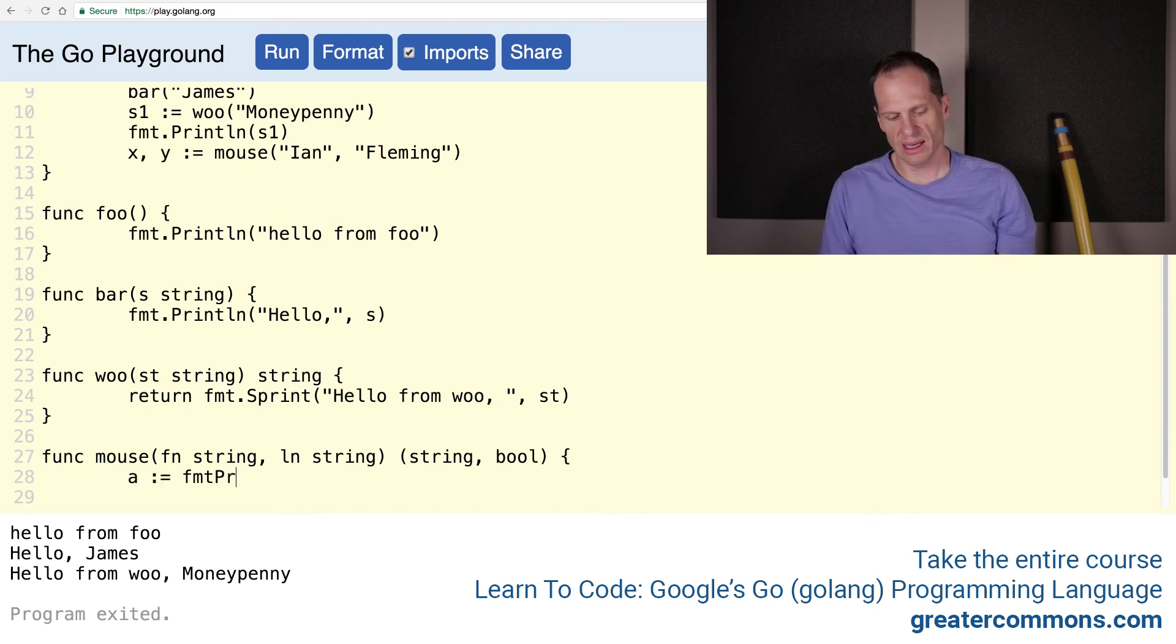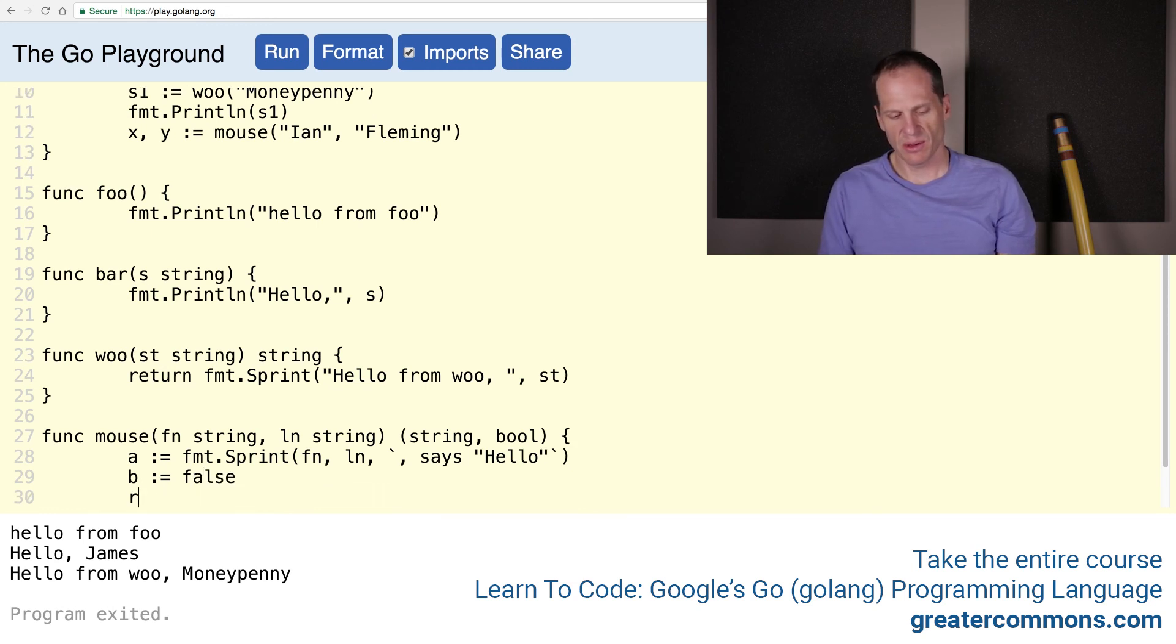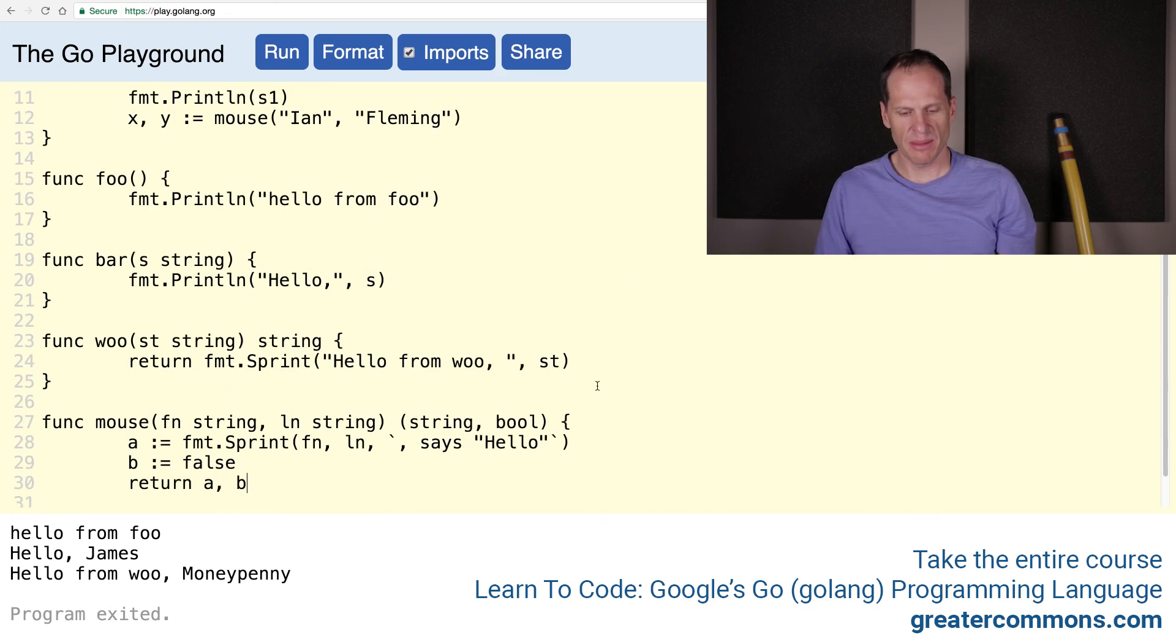And we'll do fn, comma ln, says hello. Cool. There we go. And we'll do b colon equal is false. And then we can return a, the string, and b, the false. Now when we call mouse, we get those. So let's use them. Format, print line.